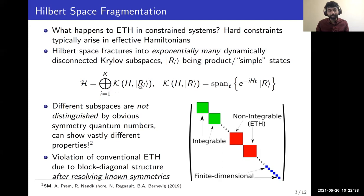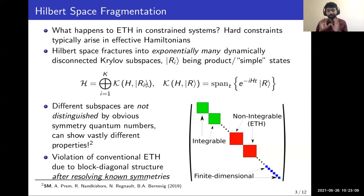The Hilbert space is a direct sum of these Krylov subspaces, which are spanned by some simple product initial states. This is not surprising if different initial states are distinguished by symmetry quantum numbers, but the surprising part is that even when two initial states have the same symmetry quantum numbers, there is still this fracture into different subspaces. These different subspaces can show vastly different properties — some can be integrable, some non-integrable, or you could have finite-dimensional blocks — all after resolving the known symmetries.